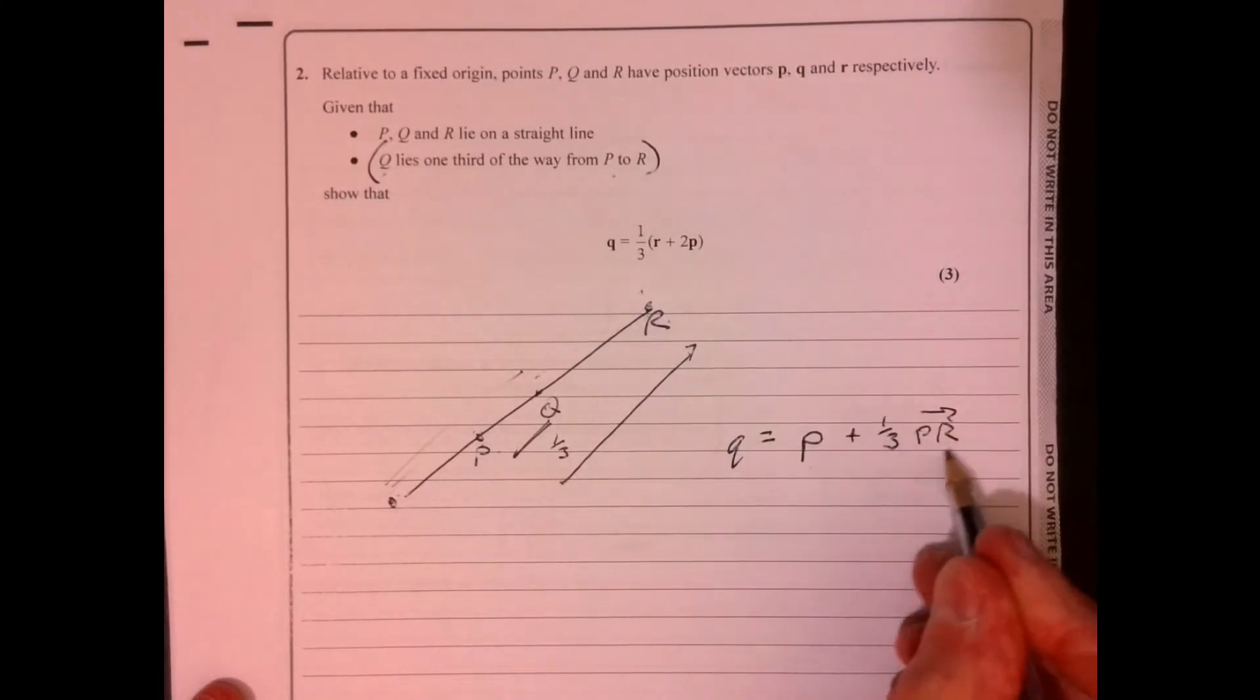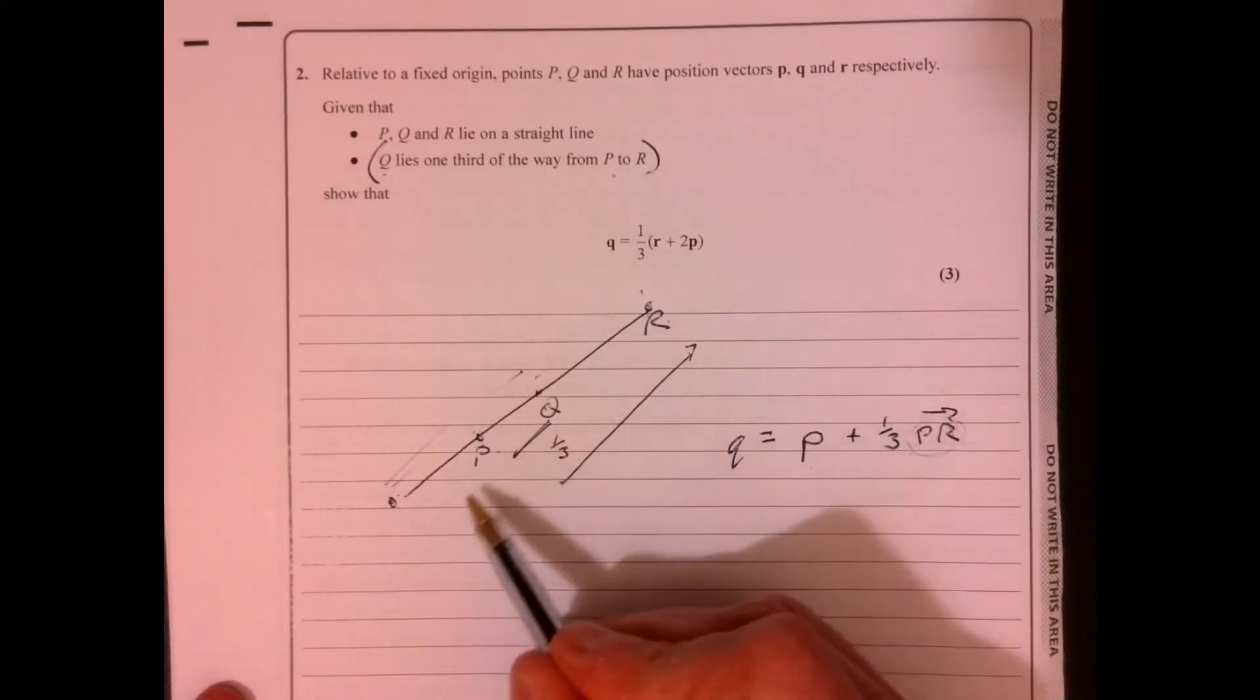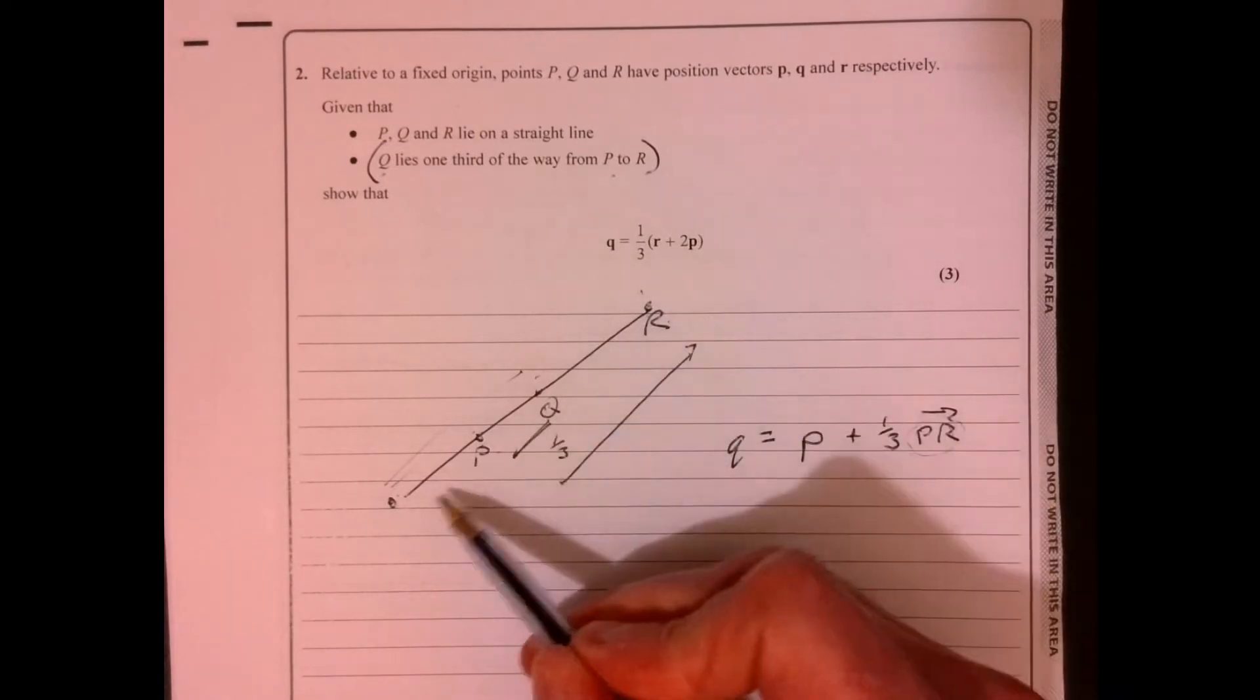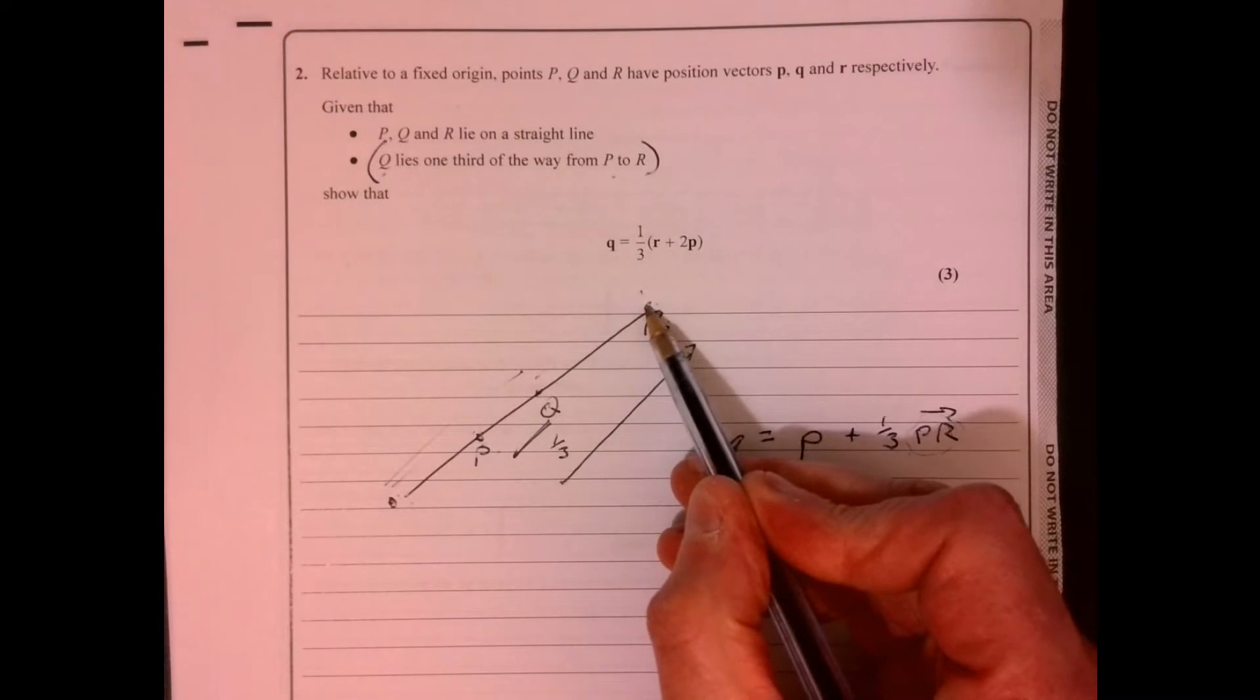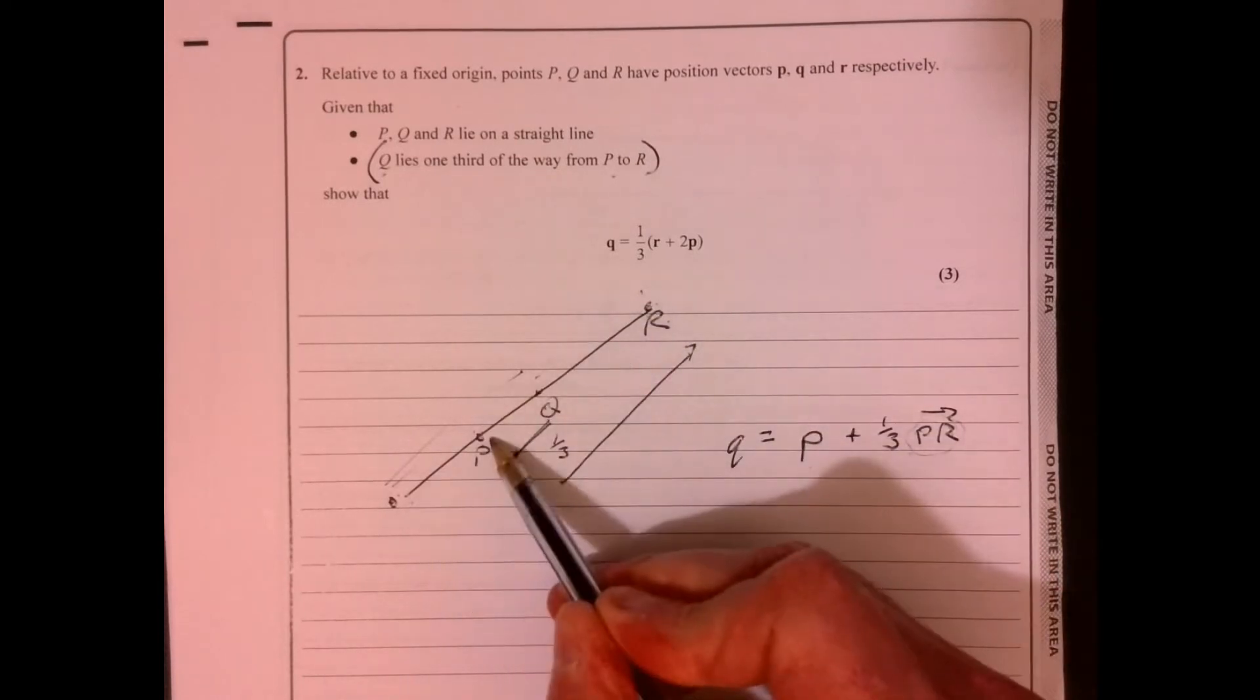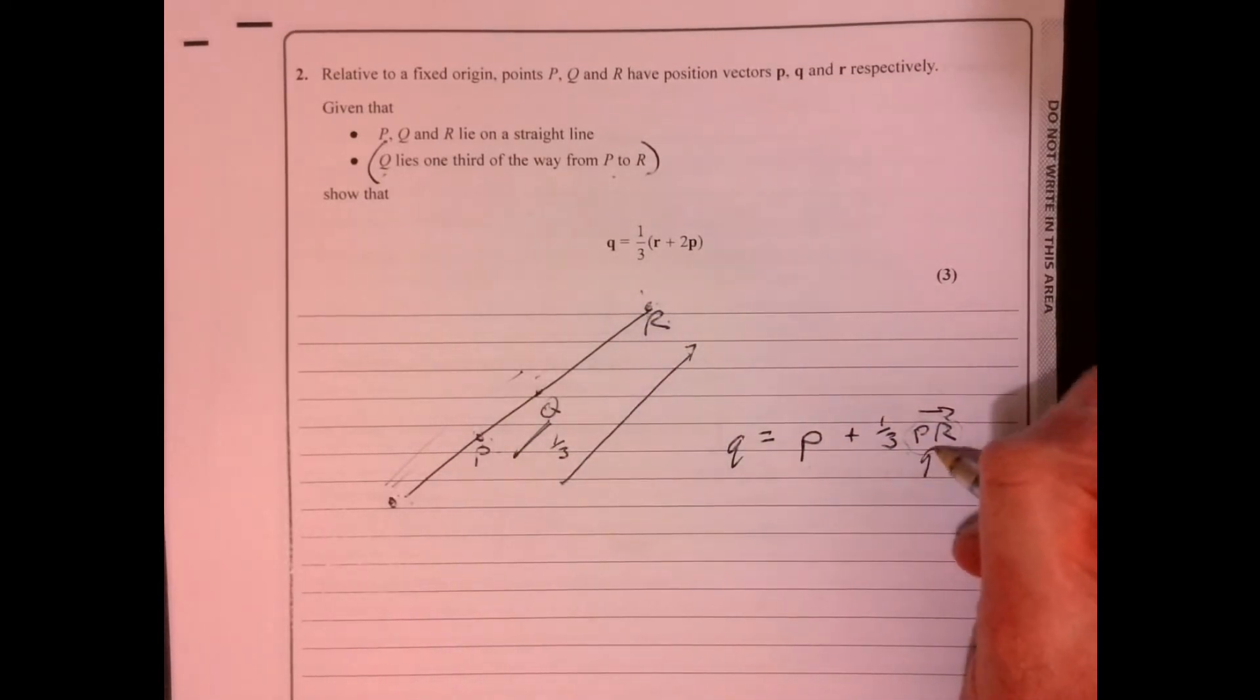Now we just need to think about, well, what's vector PR? Well, PR is going to be R take away P.